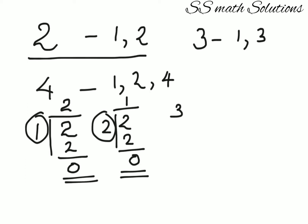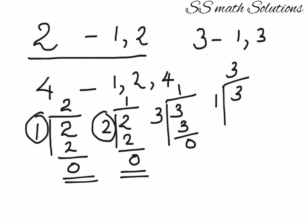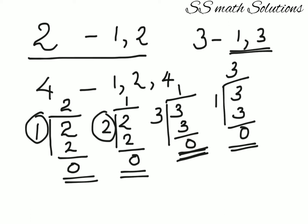For 3, dividing by 1: one into three is three, remainder zero. Dividing by 3: one into three is three, remainder zero. In both cases we got remainder zero. The numbers which give zero as the remainder when dividing are the factors of that number.